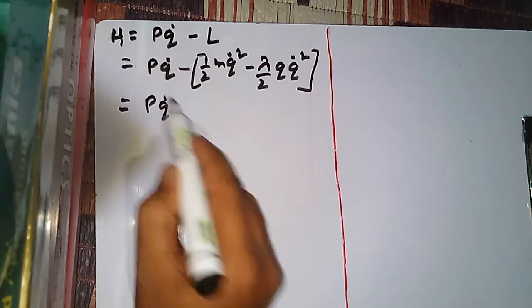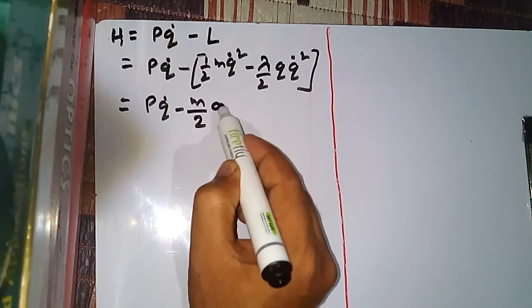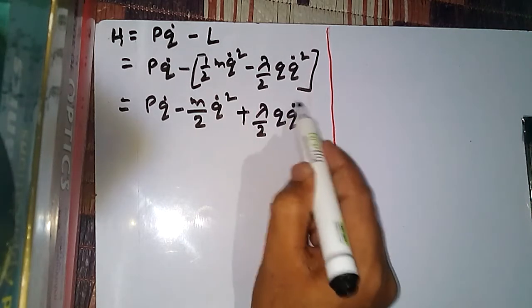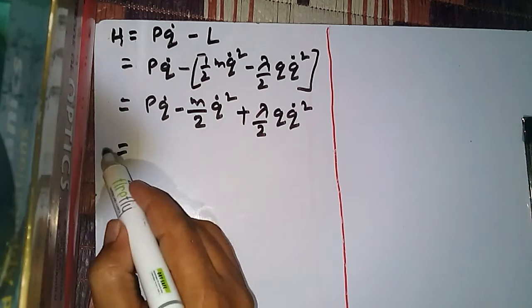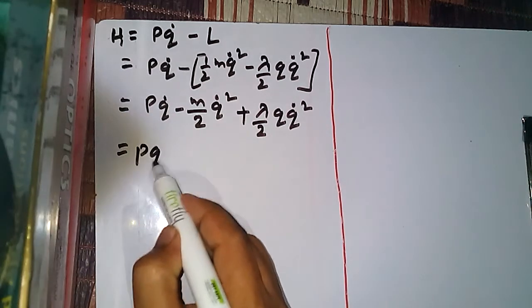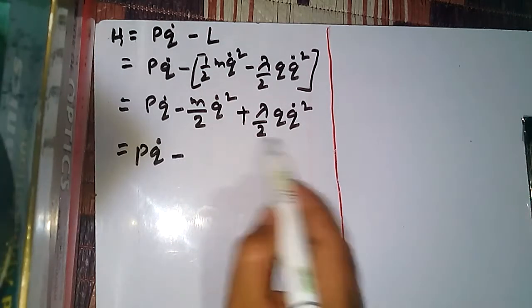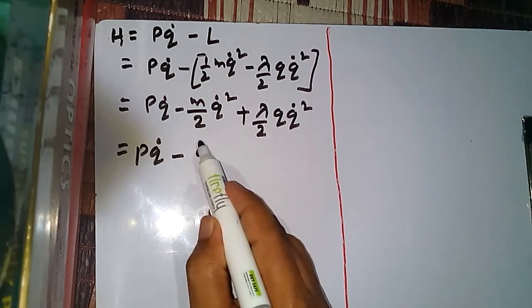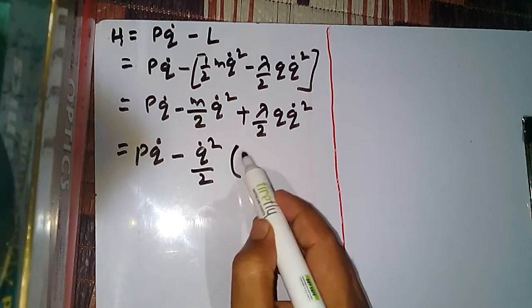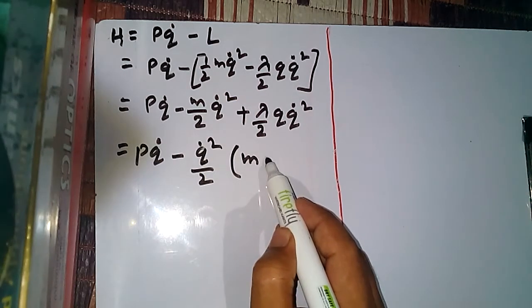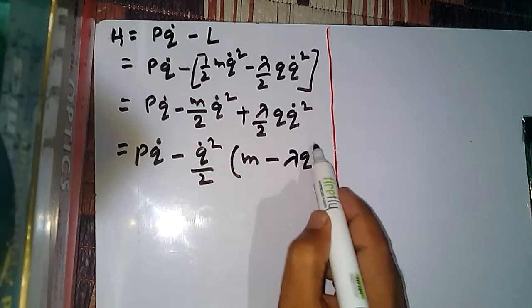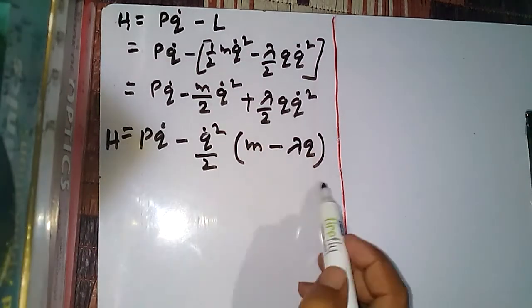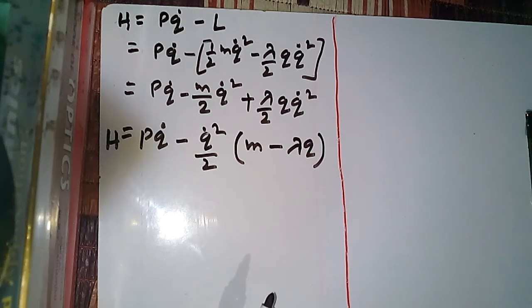Expanding, we have H = pq̇ - (m/2)q̇² + (λ/2)q·q̇². Doing further simplification, we take q̇² as common from the last two terms, giving us m minus λq as the coefficient. So we obtain this expression for the Hamiltonian — but this is not yet the final answer.